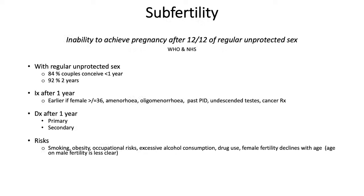Subfertility is the inability to achieve pregnancy after 12 months of regular unprotected intercourse — that's the definition given by both the WHO and the NHS. With regular intercourse, defined as about every two to three days, 84% of couples will conceive within a year and 92% within two years. Investigations begin after a year of trying, but earlier if the female is 36 or above or if there are problems such as pelvic inflammatory disease or cancer treatment.